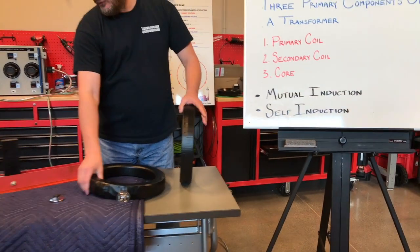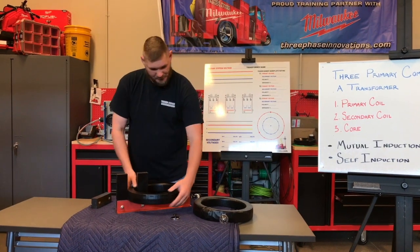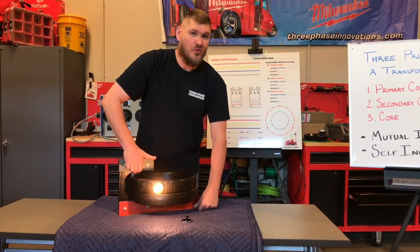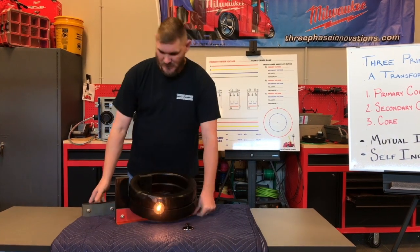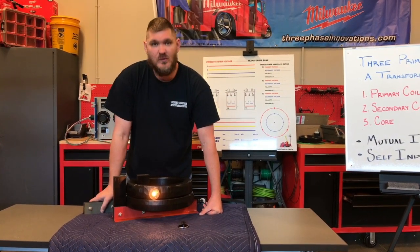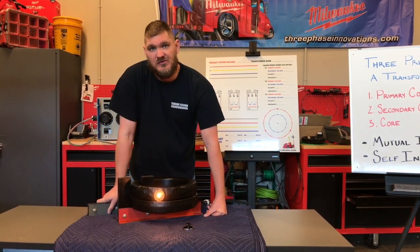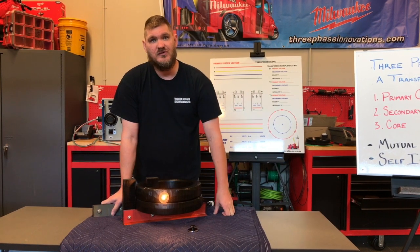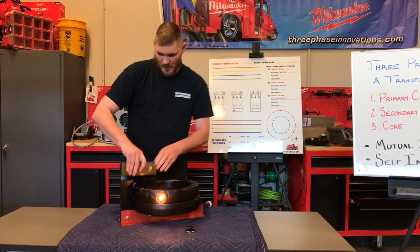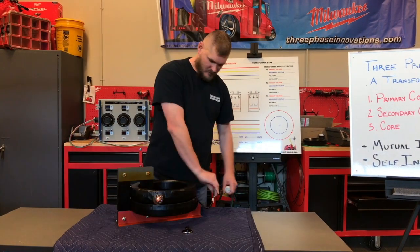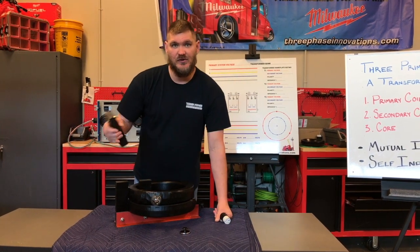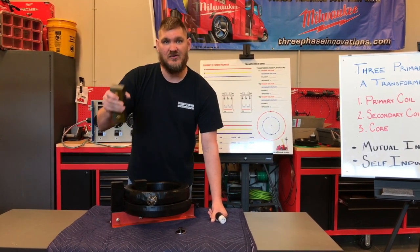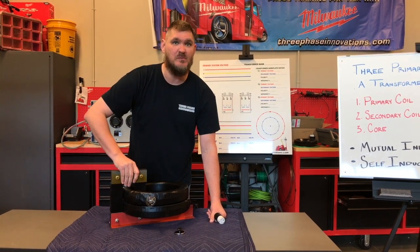Imagine what a step-down transformer feeding someone's house experiences — a magnetic field from a 7,200-volt circuit creates an enormous magnetic force inside that transformer. Why do we use iron? When de-energized, iron won't retain the magnetic field or store any electrical charge in the core — it will actually de-energize, and it goes back to just being a piece of iron rather than an electromagnet.